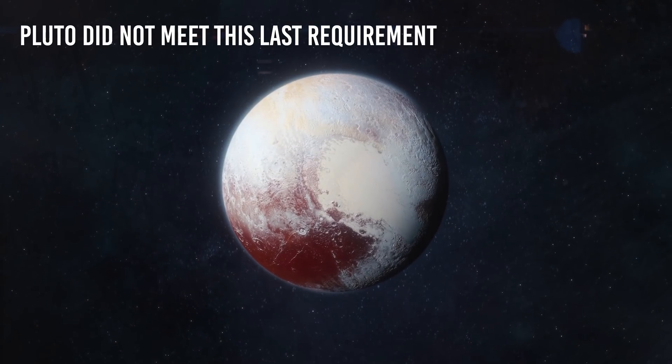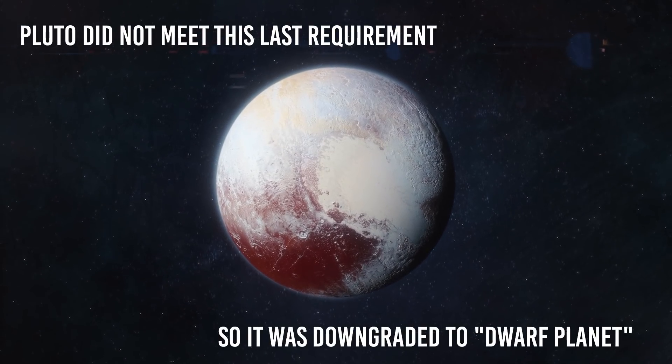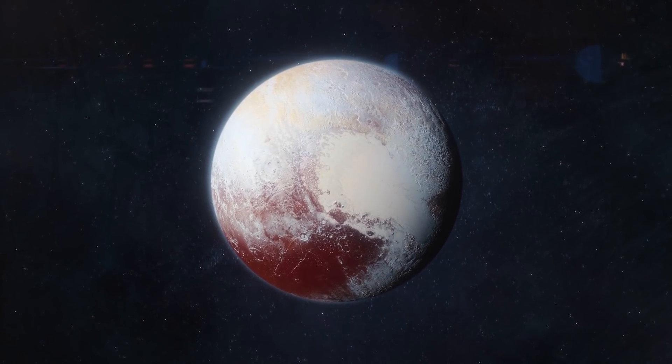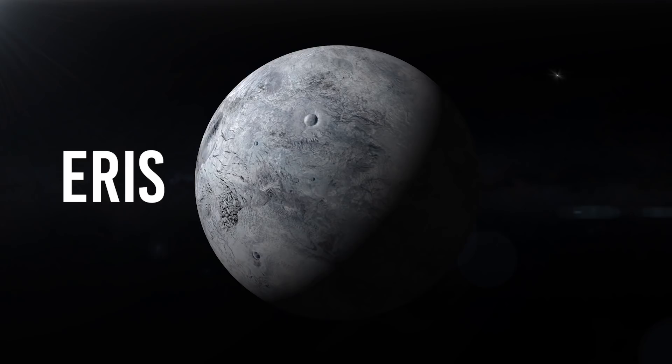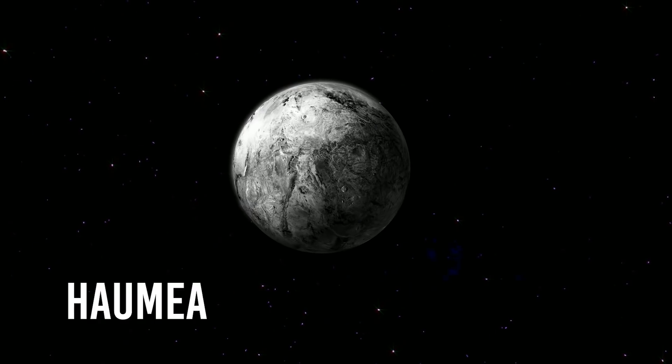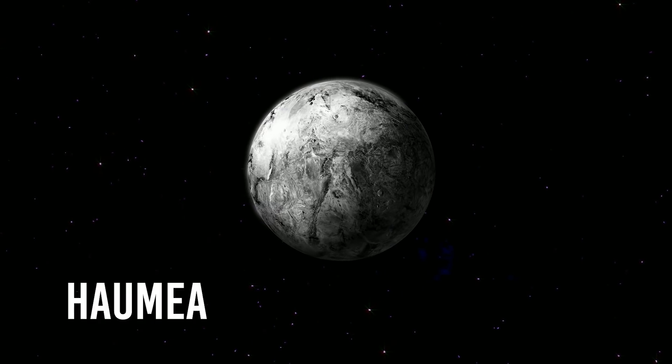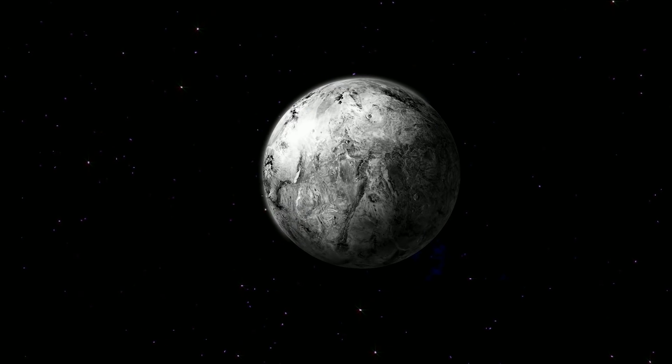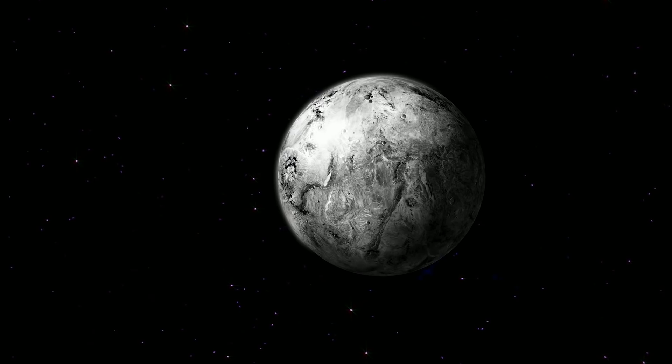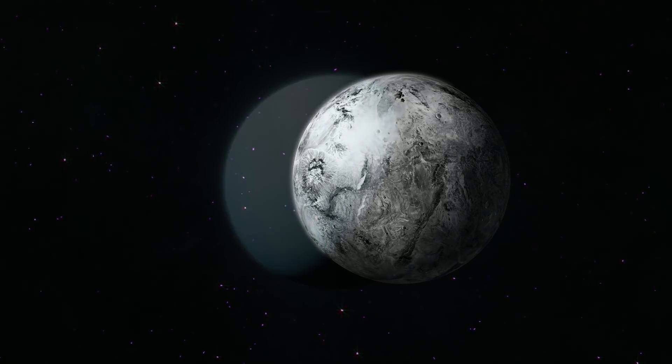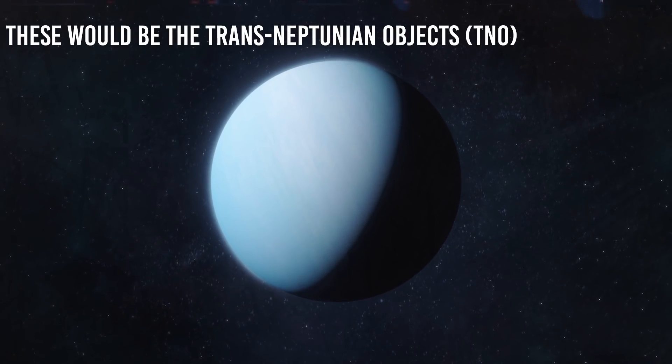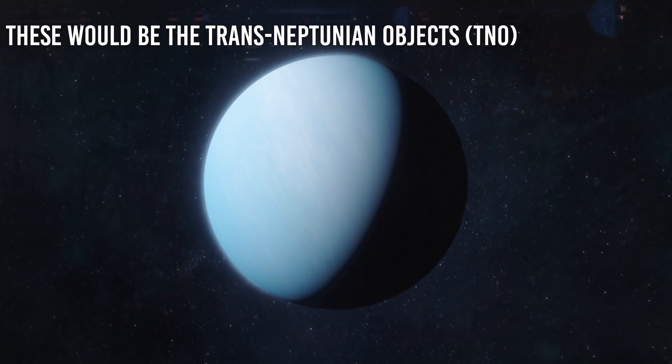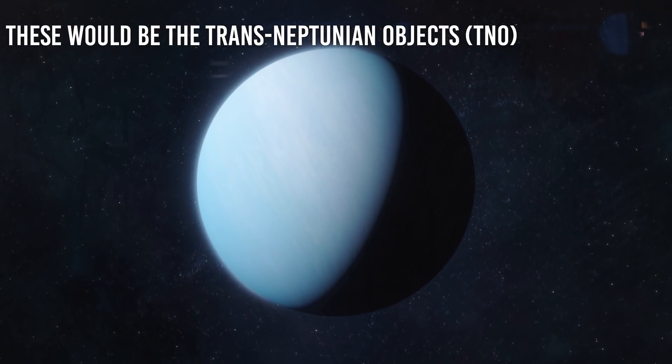Pluto did not meet this last requirement, so it was downgraded to dwarf planet, a new classification that includes other bodies very similar to Pluto, such as Ceres, Eris, Makemake, and Haumea. In addition, another new definition was added to classify bodies that were beyond the orbit of Neptune, but that do not meet the size to be considered planets. These would be trans-Neptunian objects, or TNO, that are bodies whose orbit extends beyond that of Neptune, with Pluto being the first of these bodies.